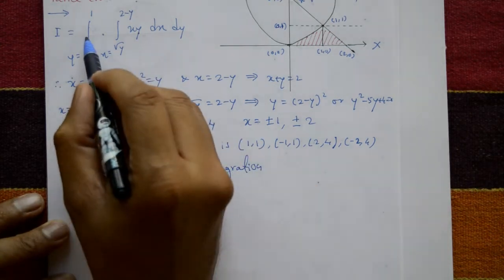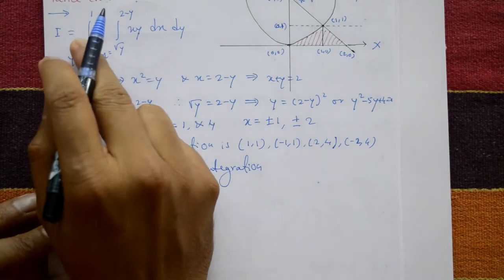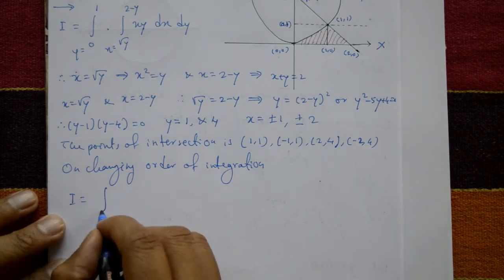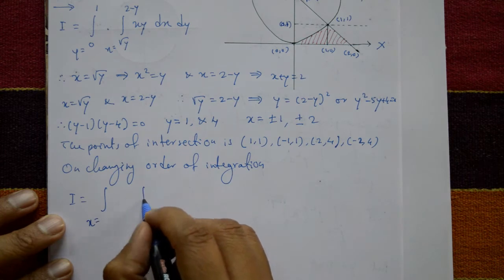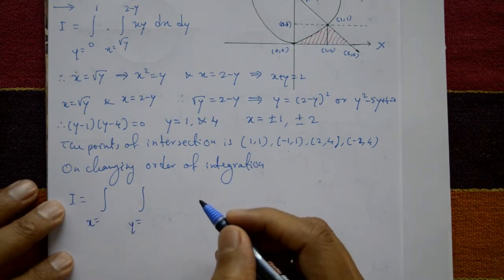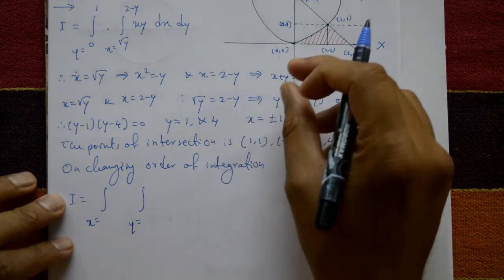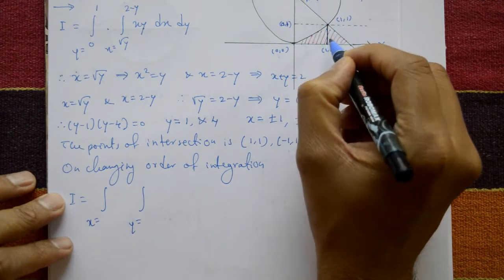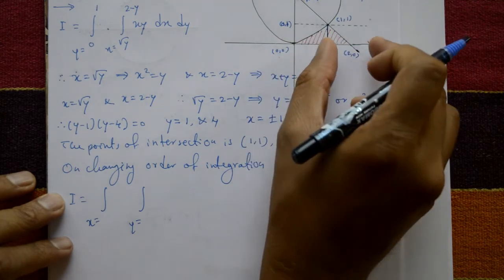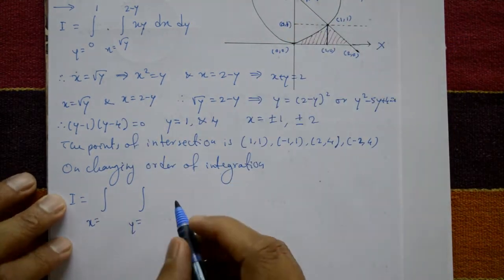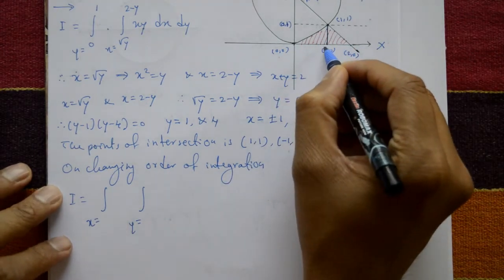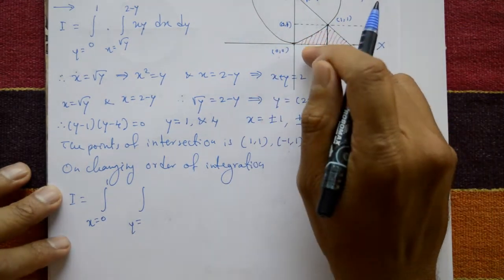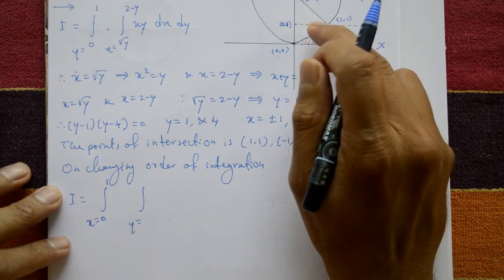On changing the order of integration: originally y is the outer integral and x is the inner; after changing, x becomes the outer and y becomes the inner. The region must be split into two parts for easy evaluation — we separate the total area into two sub-areas, calculate each, then add them.